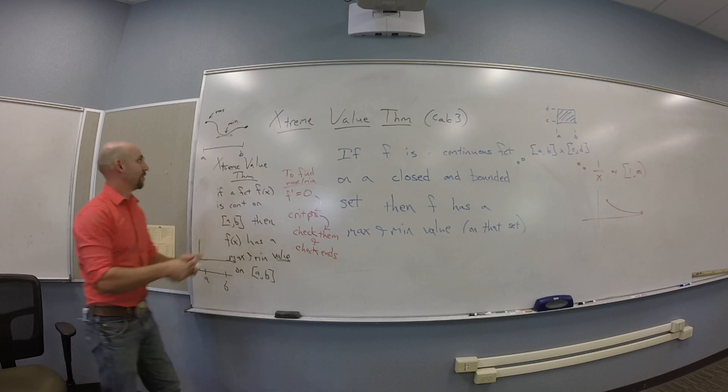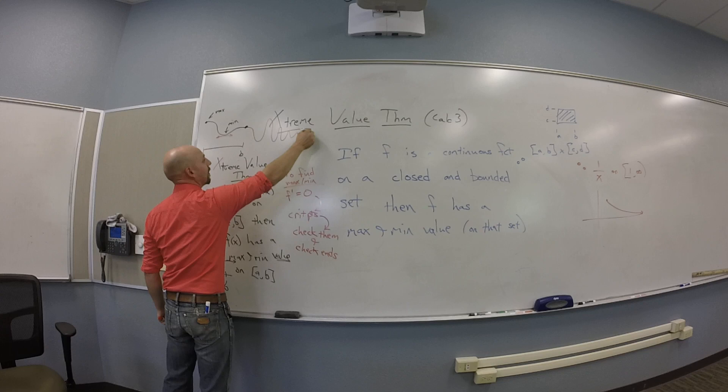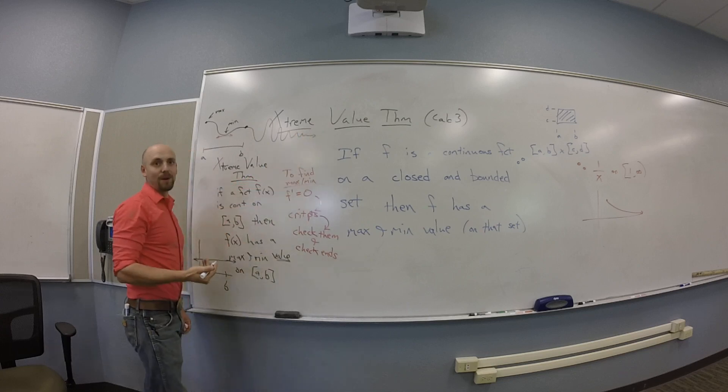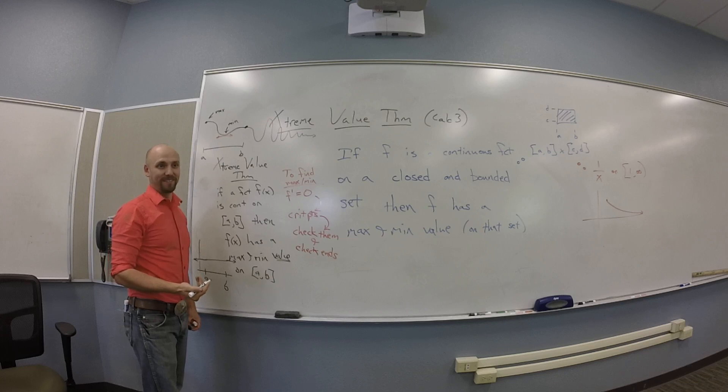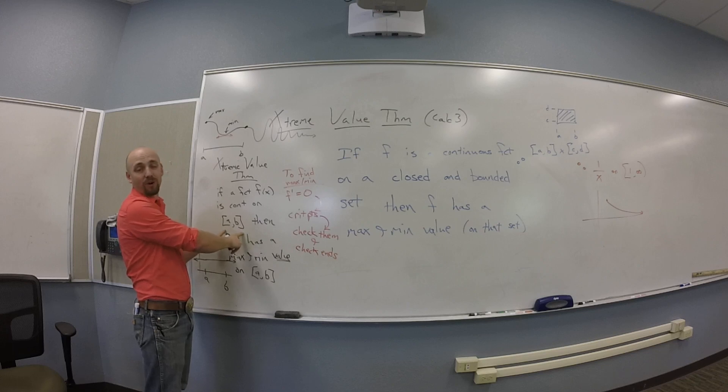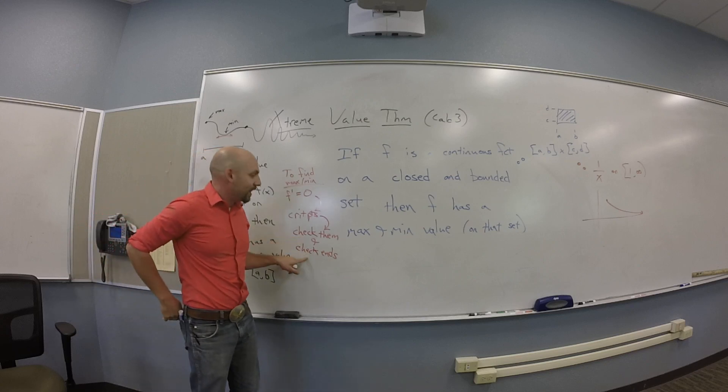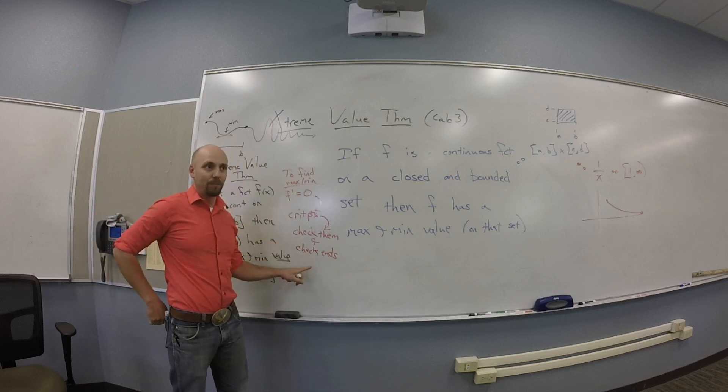And actually, we can do a little bit better than checking all the critical points. You guys see why I might not care about all of them? Like, there might be a billion critical points, or infinitely many critical points. But if I'm looking on the interval a, b, right? I'd probably pitch any that aren't in there. Because checking them is sort of a waste of time. So I need to check them and then check the ends and then compare the values.